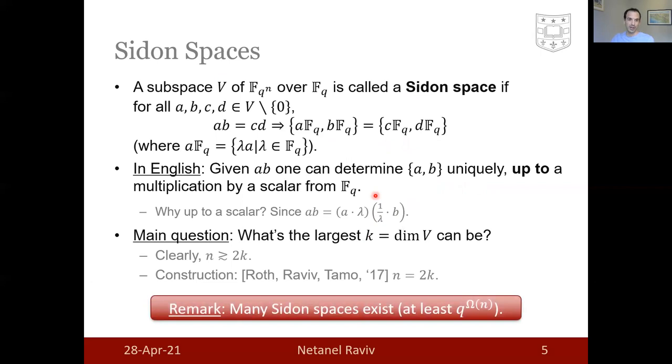And the respective construction was given by me and my collaborators a few years ago with n equals 2k. I will only remark that a Sidon space is not something unique, there are plenty of those, and a rough bound is due to the domain of them.